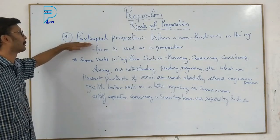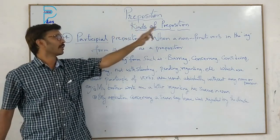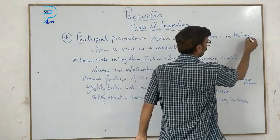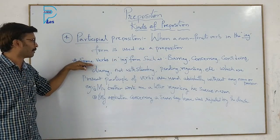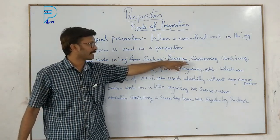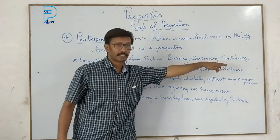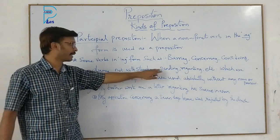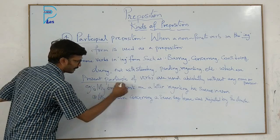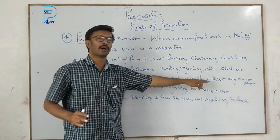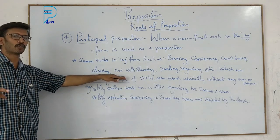The fourth kind of preposition is participial preposition. When a non-finite verb — that is, the -ing form of a verb — is used as a preposition, it is called a participial preposition. Some verbs in -ing form used this way include: bearing, concerning, considering, during, notwithstanding, pending, regarding — present participles of verbs used absolutely without any noun or pronoun.